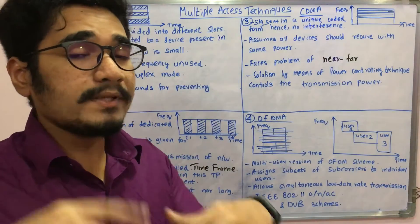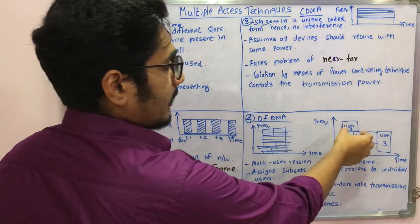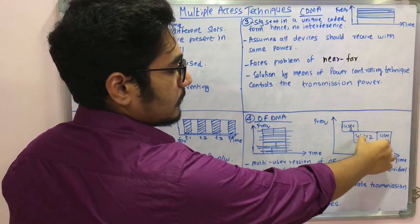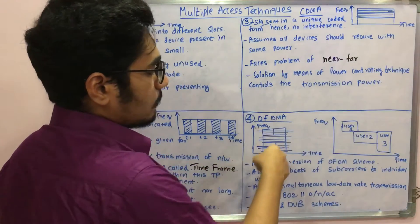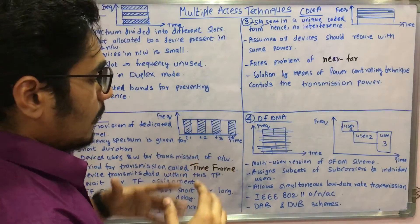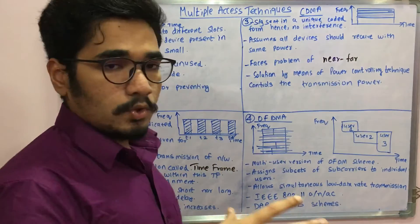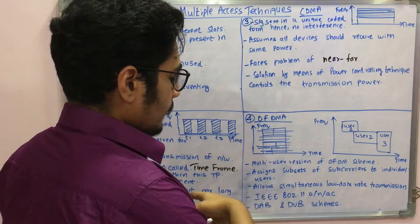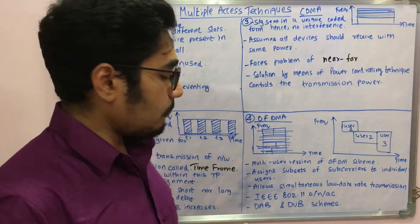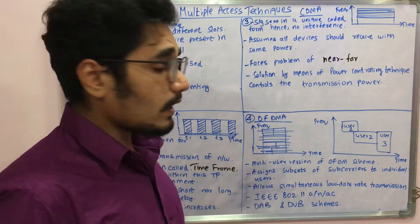There is an overlapping kind of activity which happens at the right angles. You can see only the user is allocated at the right angle. Here also the division is done at the right angles. This is applicable for IEEE devices 802.11a and ac, and then it's employed for schemes like digital audio broadcasting and digital video broadcasting schemes.